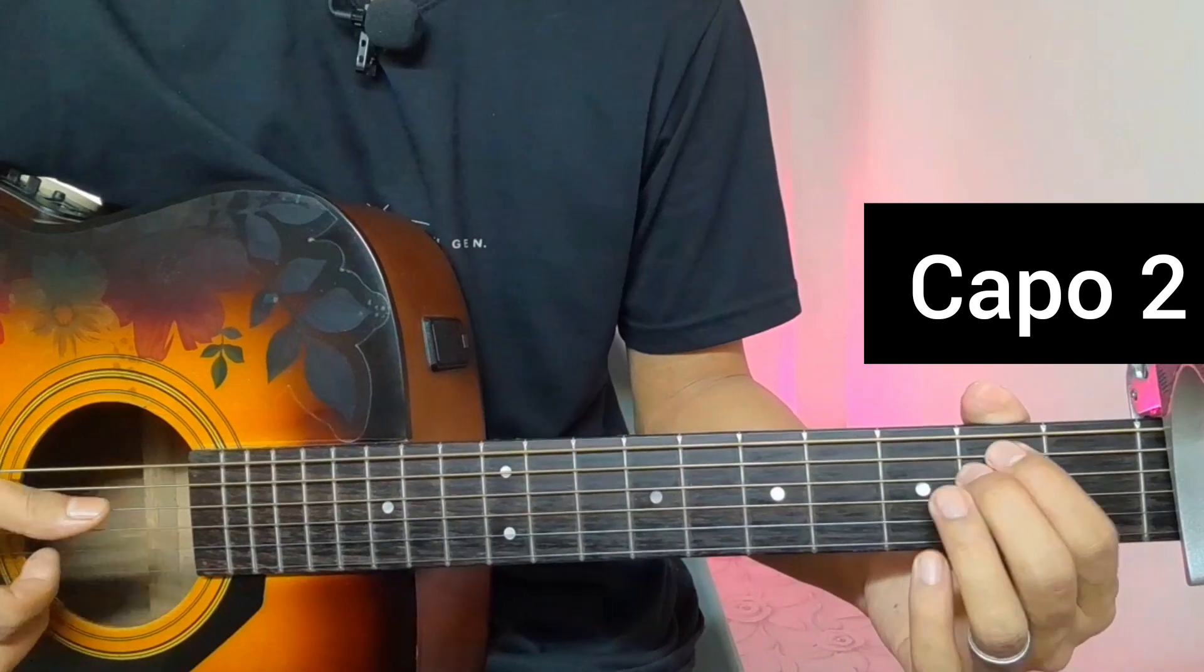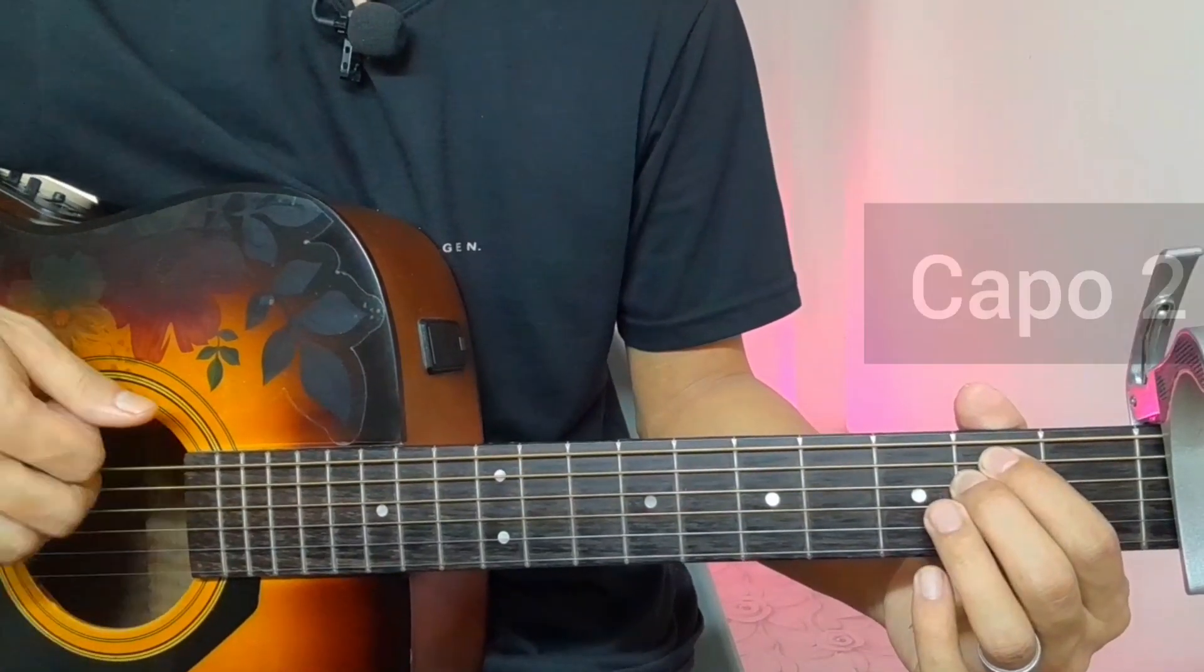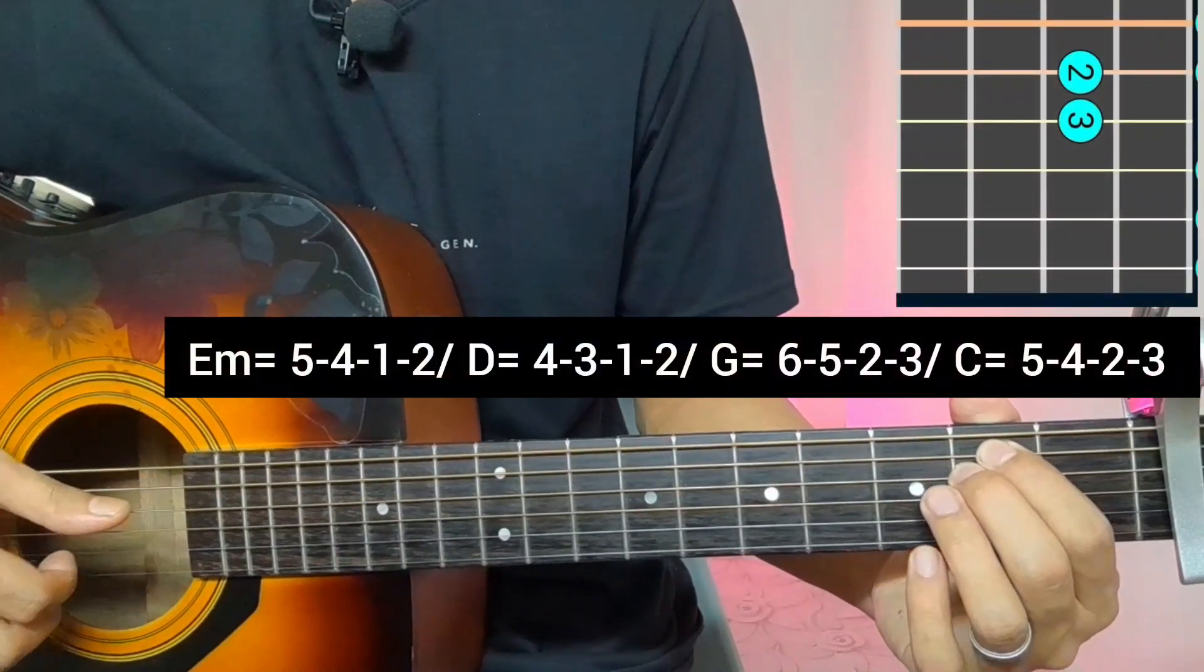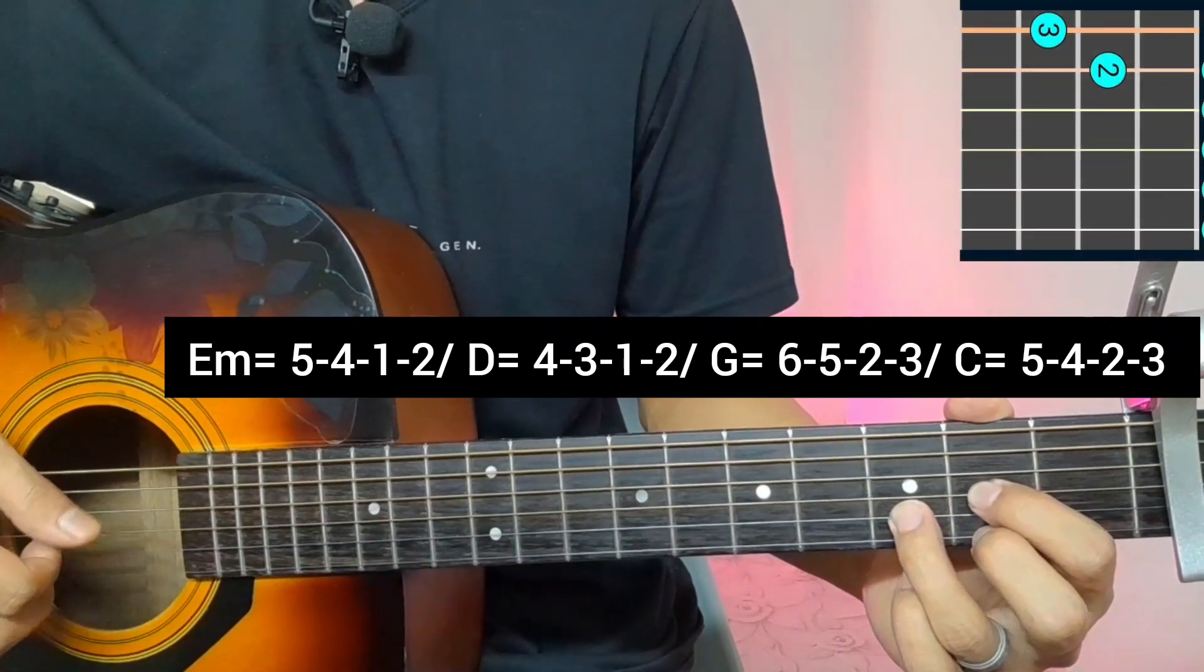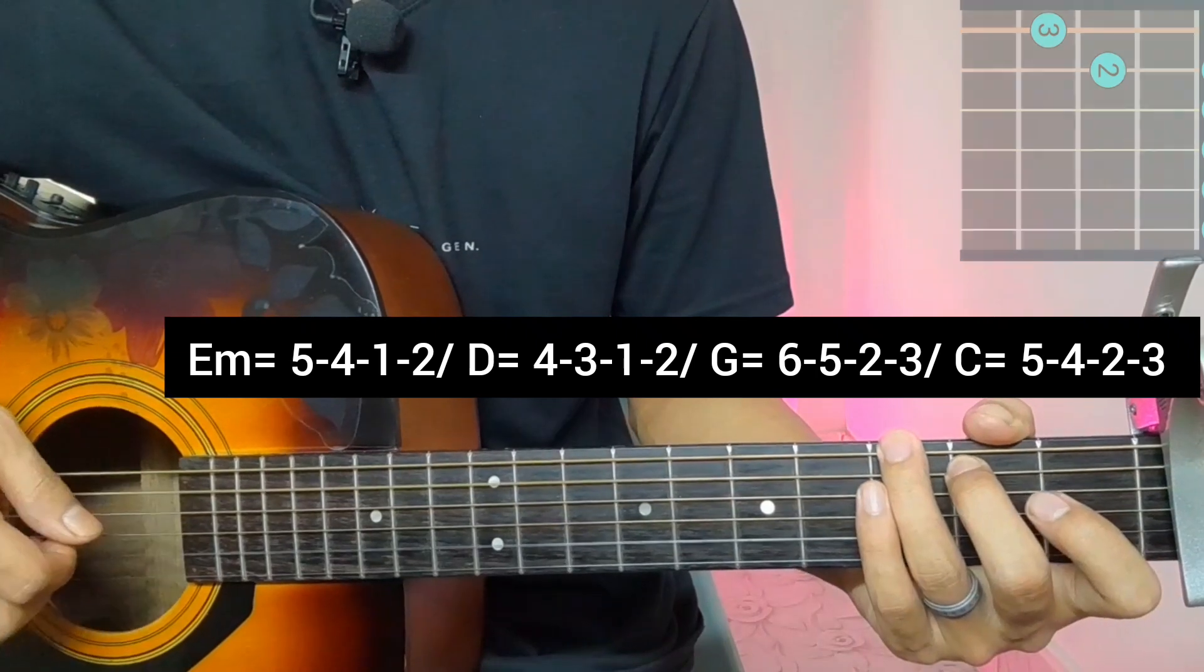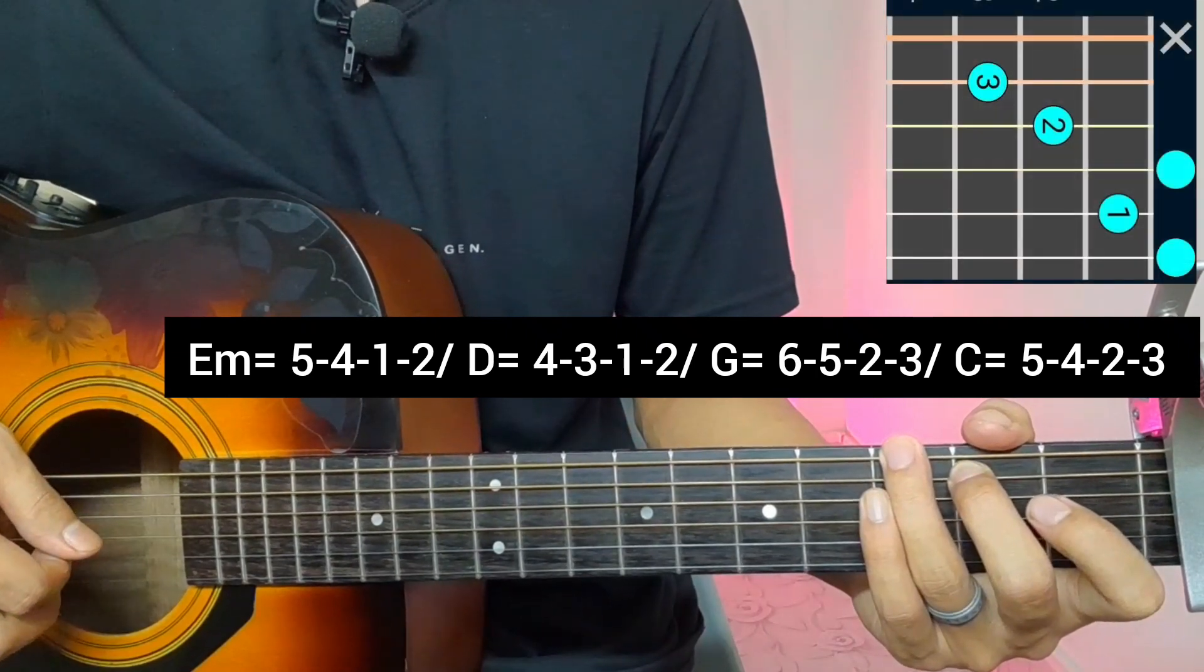The song uses a capo on the second fret. The whole song uses this plucking pattern with these chords: E-minor 5-4-1-2, D-major 4-3-1-2, G-major open 6-5-2-3, and C-major ending in 5-4-2-3.